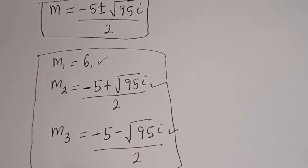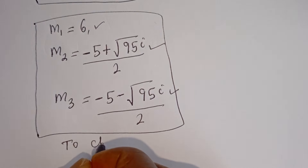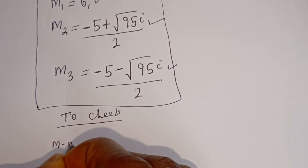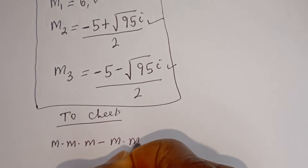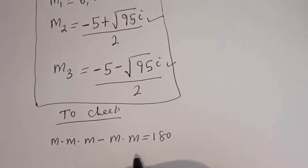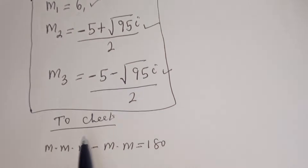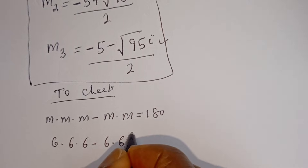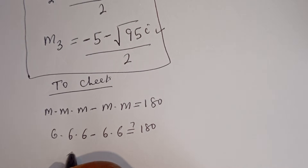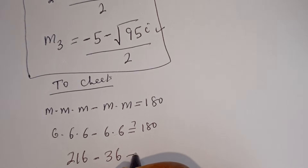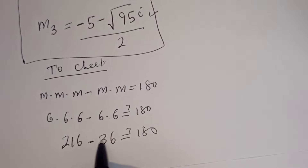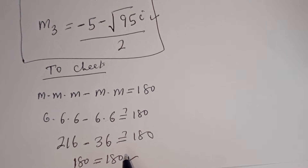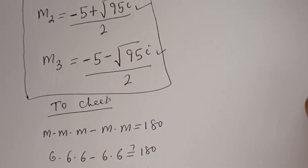We can check to confirm if this answer is right or wrong using the real root. The given equation is M times M times M minus M times M equals 180. When M equals 6, we have 6 times 6 times 6 minus 6 times 6, which is 216 minus 36, and this is 180 equals 180, which is true. I hope you enjoyed the video — thank you for watching, please don't forget to like, share, comment and subscribe to my channel. Bye bye.